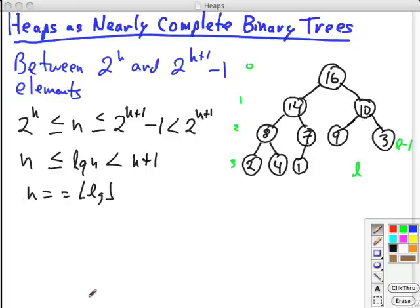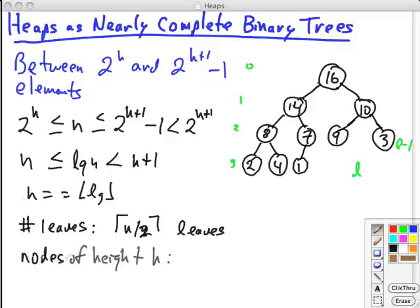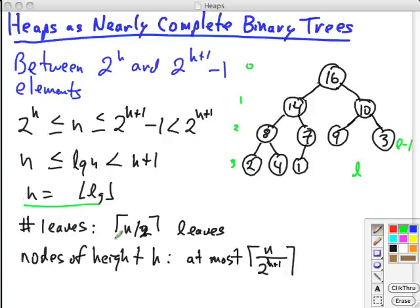We're going to note a couple other facts without proving them. So one of them is the number of leaves. It can be shown that if there are n elements in the complete binary tree, or a nearly complete binary tree, then we have ceiling(n/2) leaves. What about number of nodes at a given level, nodes of height h? We can prove by contradiction that there are at most ceiling(n / 2^(h+1)) nodes of height h in a nearly complete binary tree. So we're going to use these facts in our subsequent analyses.